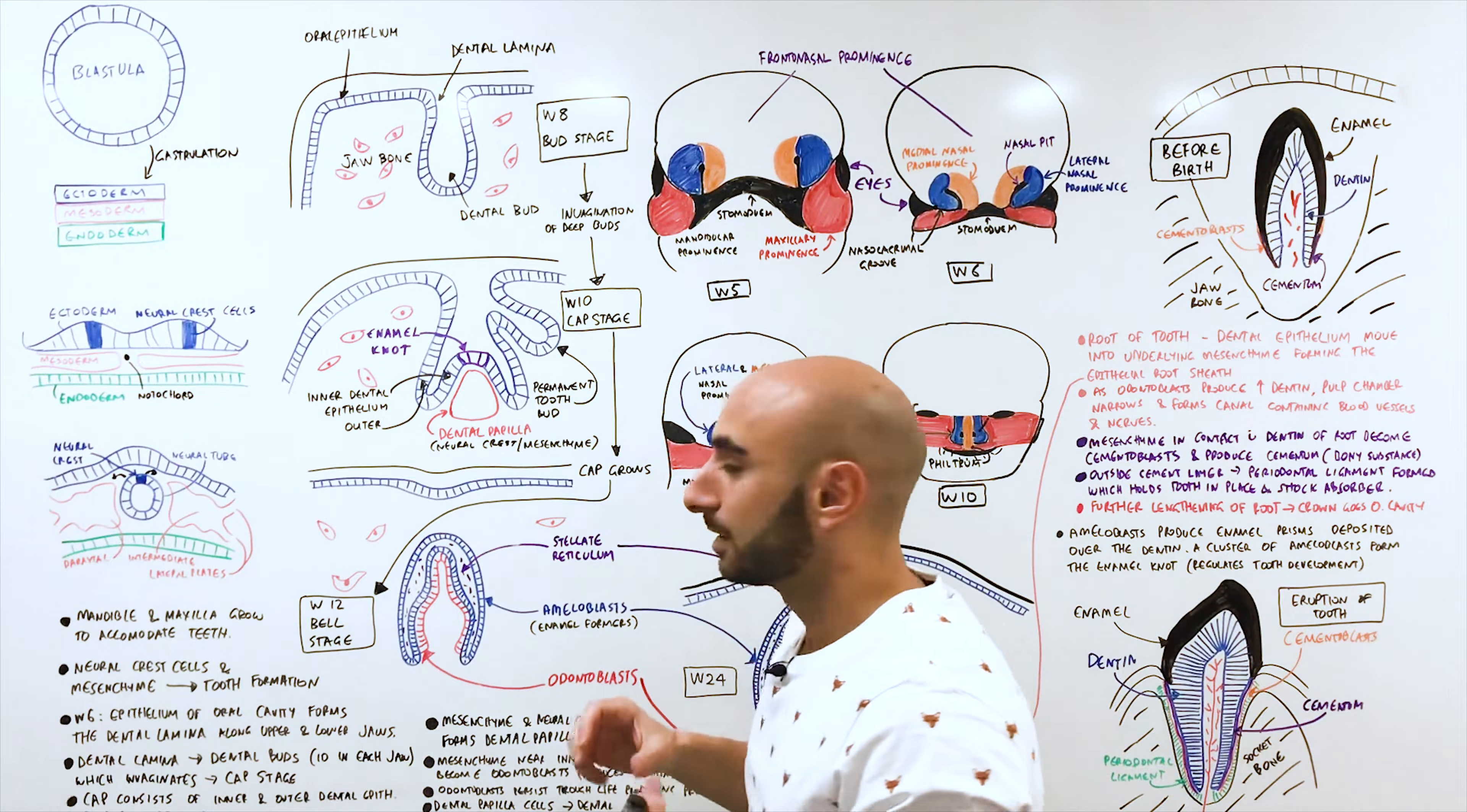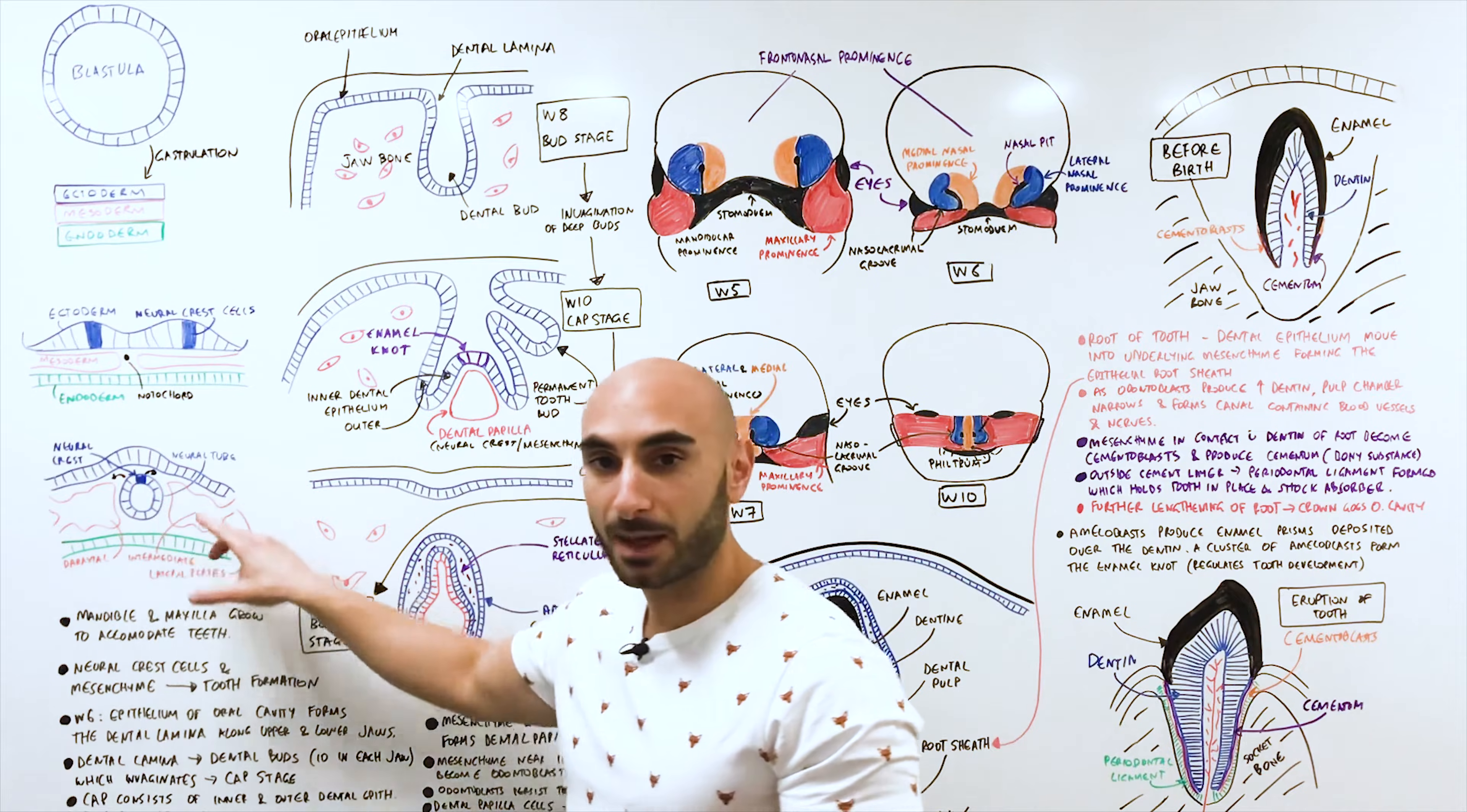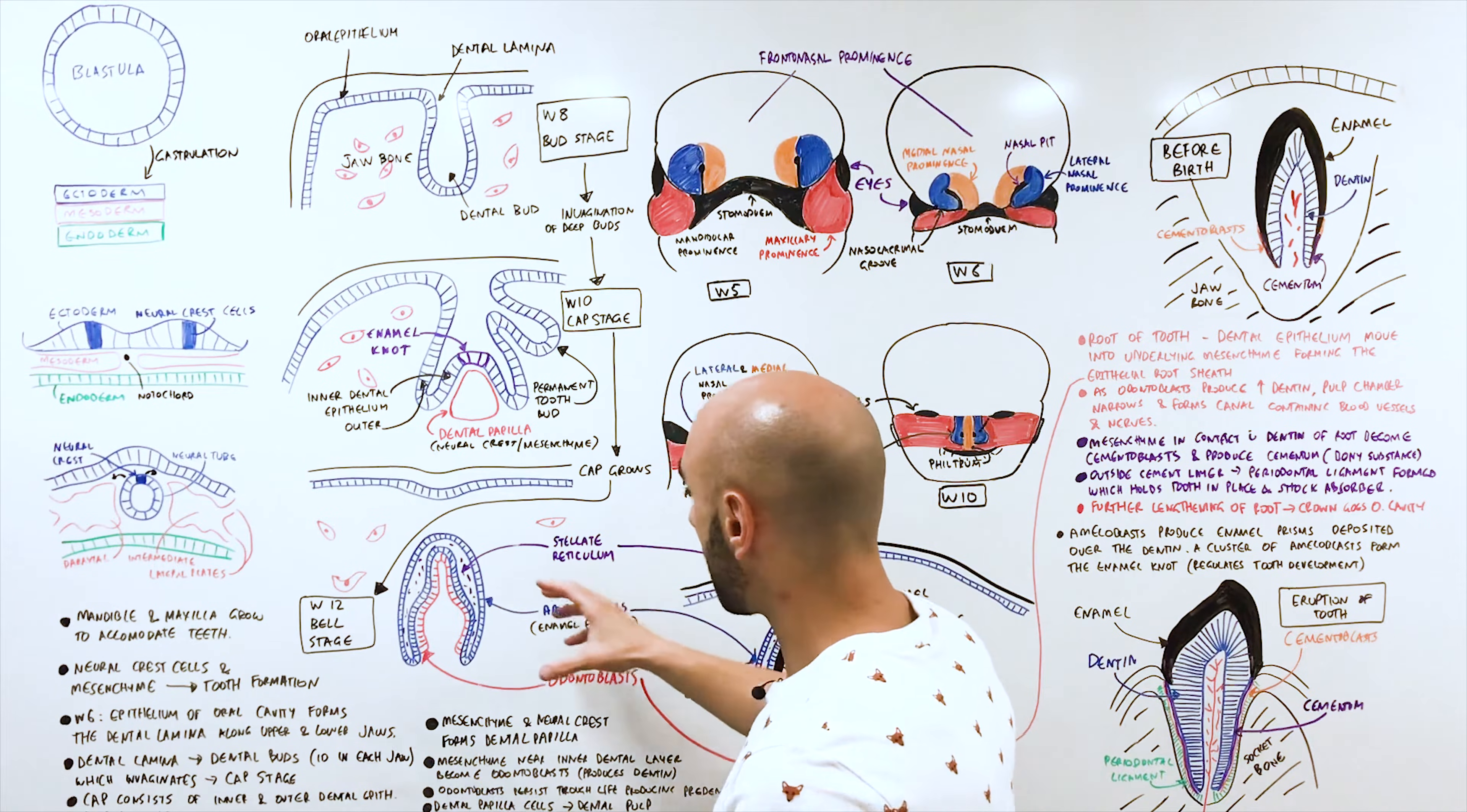So where does this dental papilla come from? Remember the neural crest cells, these interact with mesenchyme, surrounding mesenchyme which is just tissue, to make the dental papilla. So it's an interaction of this ectoderm with some mesenchymal tissue that will actually lead to the formation of this dental papilla. From week 10 at the cap stage, the cap grows and will become a bell stage because the tooth will start looking like a bell.